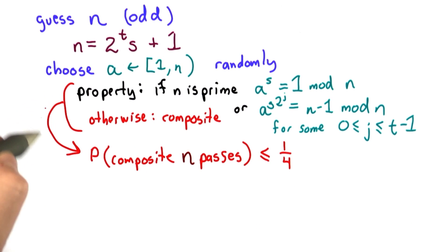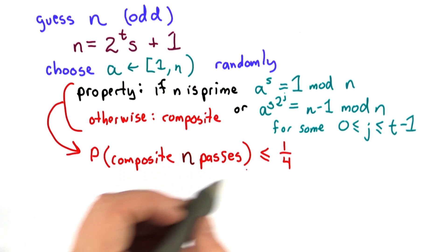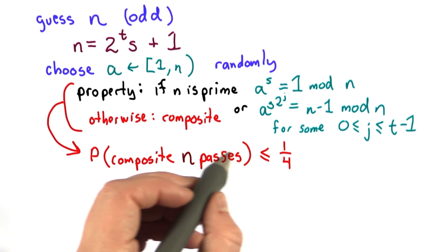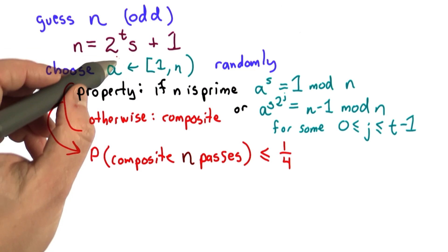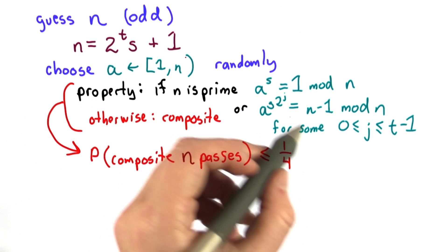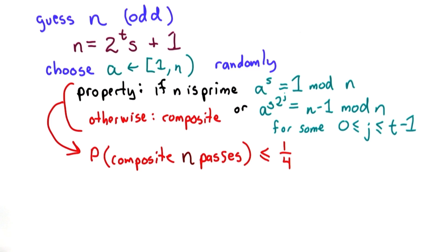So the important property that this test has that's different from the Fermat test is that the probability that a composite number passes is always less than some constant. In this case, it's less than 1 quarter. There are no bad composite numbers like the Carmichael numbers. If we choose a randomly for any composite number, the probability that the test passes is less than 1 quarter.